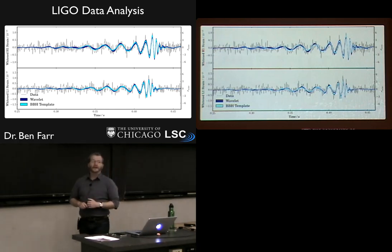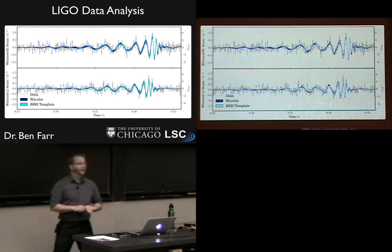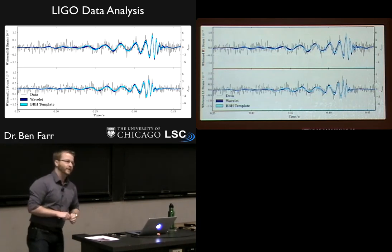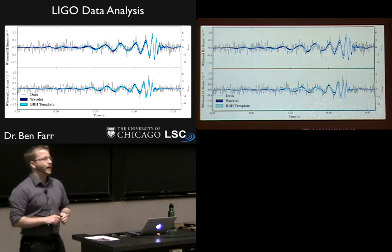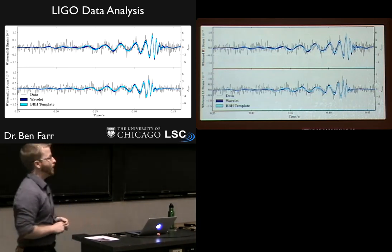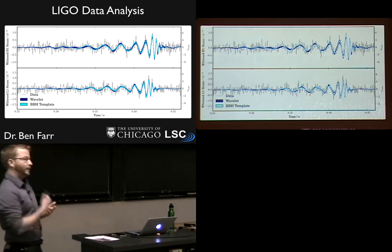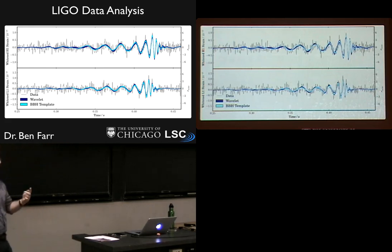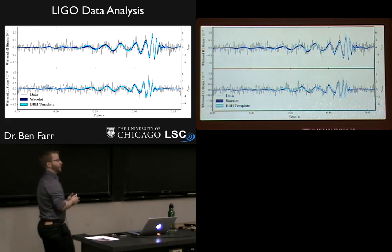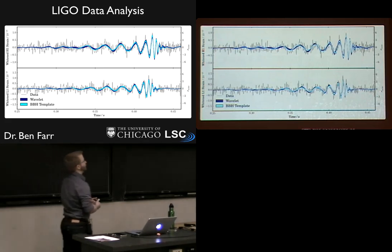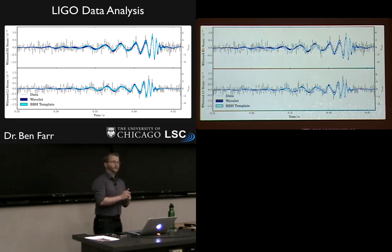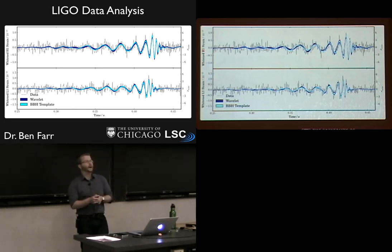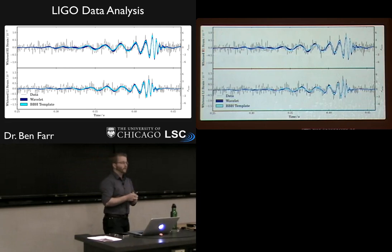Today I am going to talk a lot about how we analyze the data coming out of the LIGO instruments, and how we can go about detecting gravitational waves and characterizing the source — figuring out the properties of the source of that gravitational wave. Specifically, I'm going to focus on compact binaries: binary black hole mergers, binary neutron star mergers, things like that.